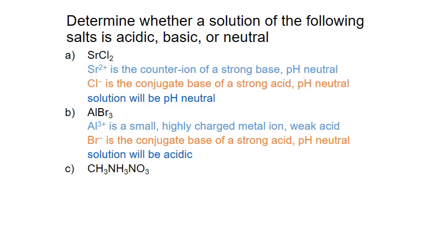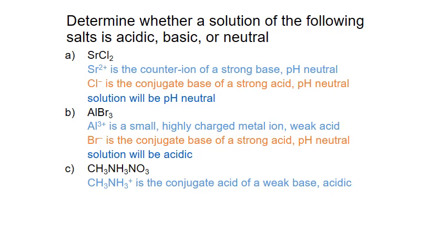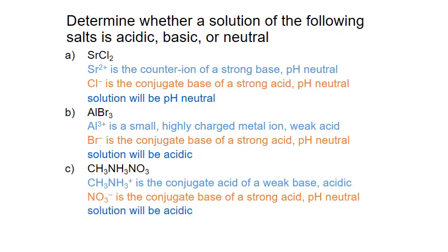In the same way, a solution of methylamine nitrate can be broken down into cation and anion. The cation is CH3NH3⁺, or methylammonium. This is the conjugate acid of the weak base methylamine, and is therefore acidic. The anion nitrate is the conjugate base of the strong acid nitric acid, HNO3, so nitrate ion is pH neutral. The pH of the solution will therefore be determined by the cation and will be acidic.